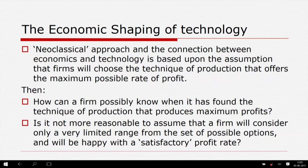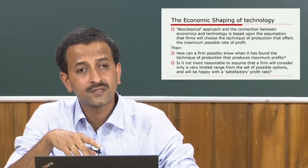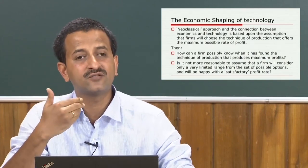In the new approaches that have developed within economics, inspiration has been found in the work of Joseph Schumpeter, with its emphasis on the aspects of innovation that go beyond and cannot be explained by rational calculation. Theoretically, one may say an entrepreneur or investor must look at maximum profit, but how can an innovator or firm possibly know when it has found the technique of production that produces maximum profits? Instead of such rational calculation, we are trying to look at some kind of satisfactory profit rate.